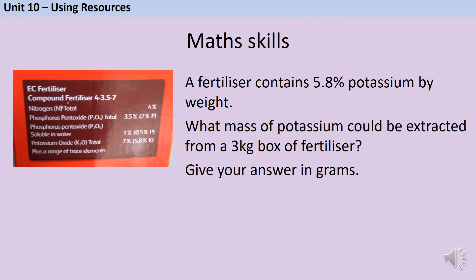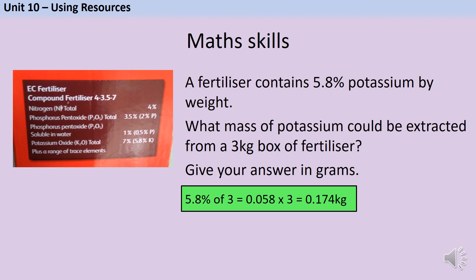NPK fertilisers are an example of a formulation, and formulations are a perfect opportunity for the exam board to test your maths skills — particularly percentages and ratios. For example: a fertiliser contains 5.8% potassium by weight — what mass of potassium could be extracted from a 3 kg box, giving your answer in grams? You need to find 5.8% of 3 kg. You can do 0.058 × 3, or 5.8 × 3 ÷ 100, both giving 0.174 kg. Converting to grams by multiplying by 1000 gives 174 grams.